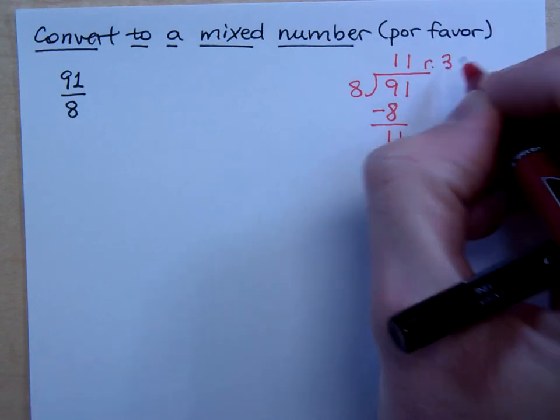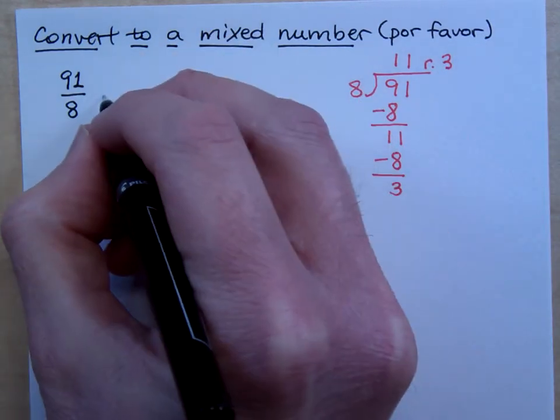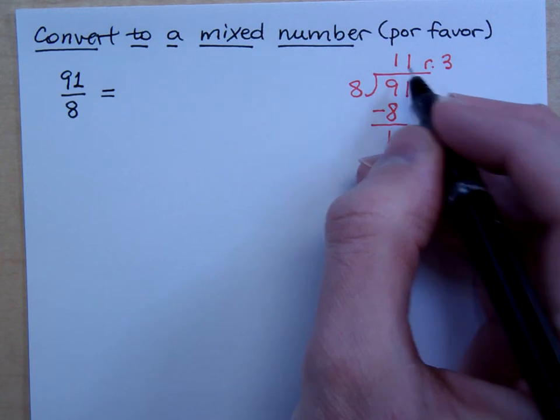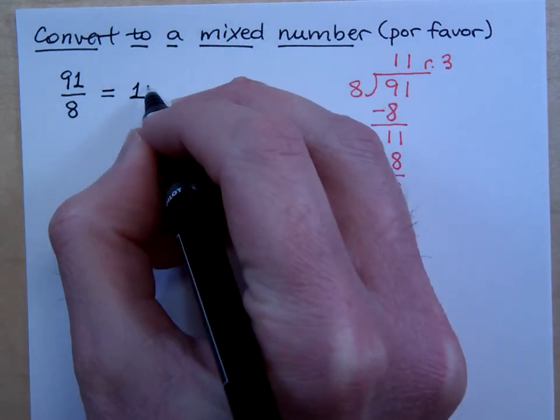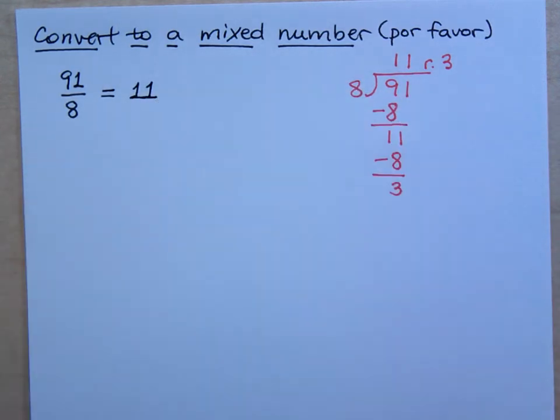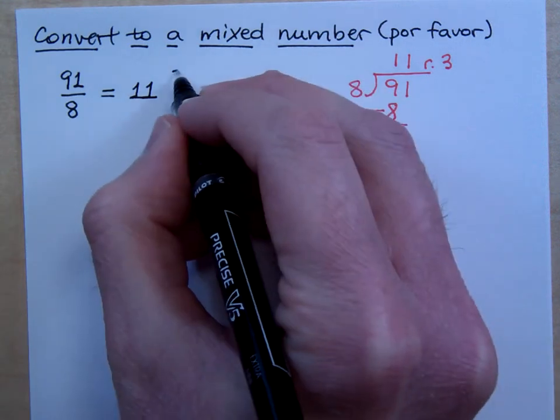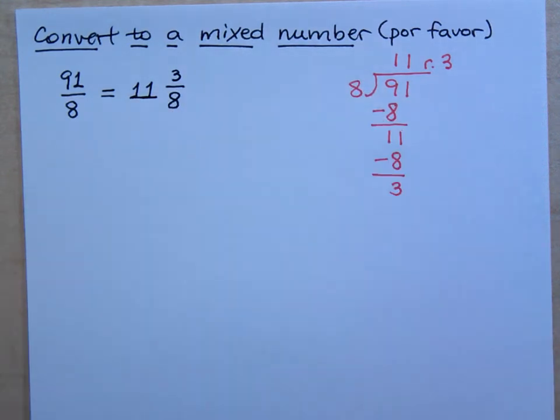So remember how we do this. We take our quotient, bless you, which is 11. So 8 goes in there 11 whole times, and then you have 3 left over.